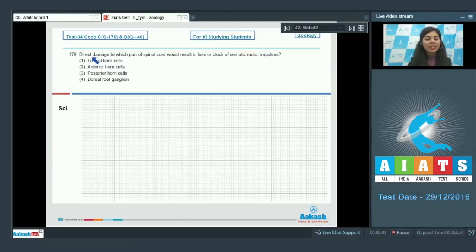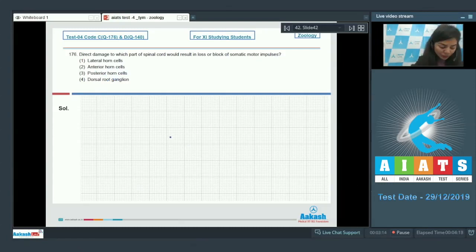Question 176: Direct damage to which part of spinal cord would result in loss or block of somatic motor impulses? Options are lateral horn cells, anterior horn cells, posterior horn cells, or dorsal root ganglion. The grey matter of the spinal cord is produced into posterior horn, lateral horn and anterior horn.